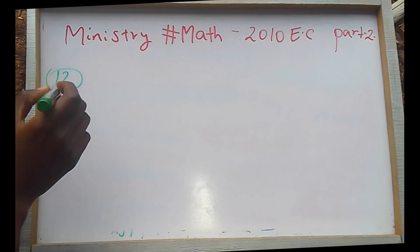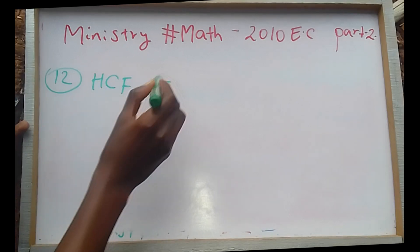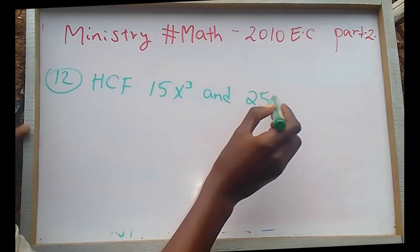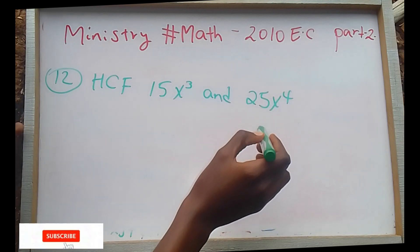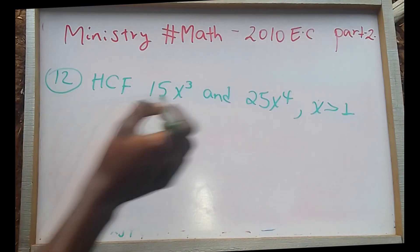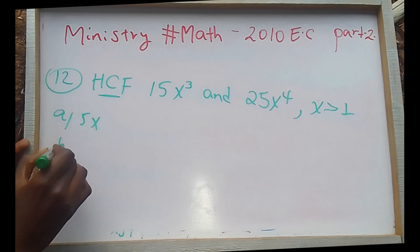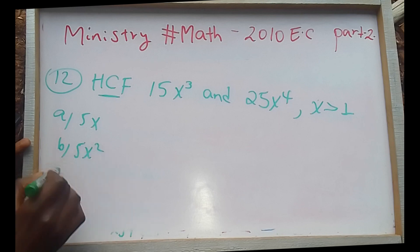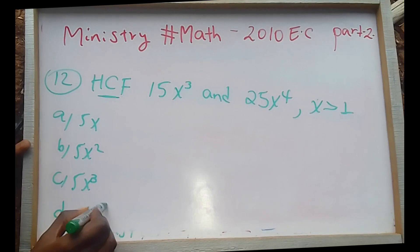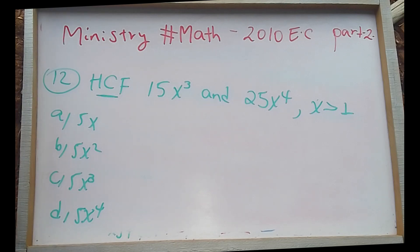Now, the highest common factor of 15x cubed and 25x to the power of 4, when x is greater than 1. Because 5x cubed — when x is greater than 1 — we find the common factors.